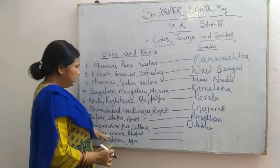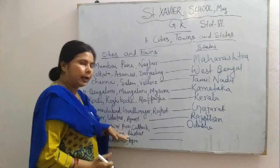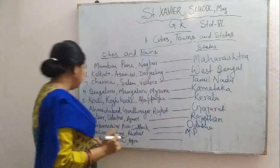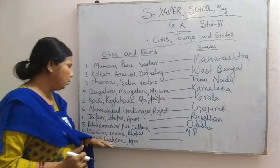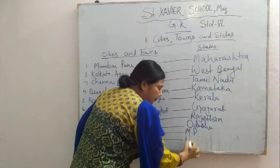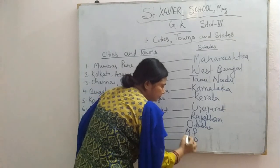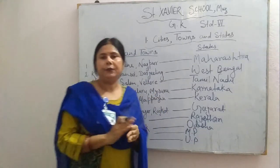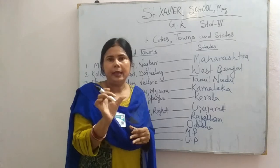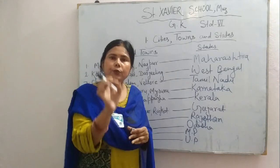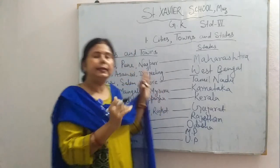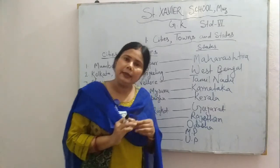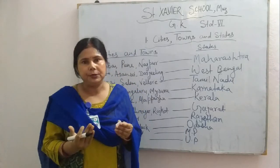Gwalior, Indore and Bhopal are in Madhya Pradesh. And Jhansi, Lucknow and Agra are in Uttar Pradesh. Okay children, there is also a homework for you. Take a political map and try to mark all these cities and their states. That's all. We will meet in the next video with the next chapter. Bye!